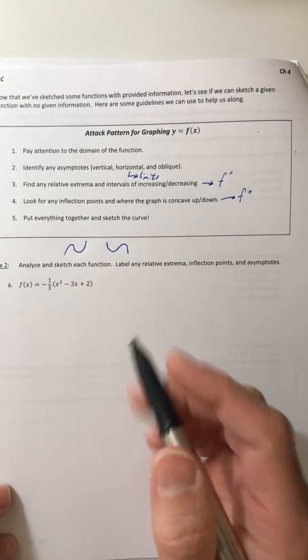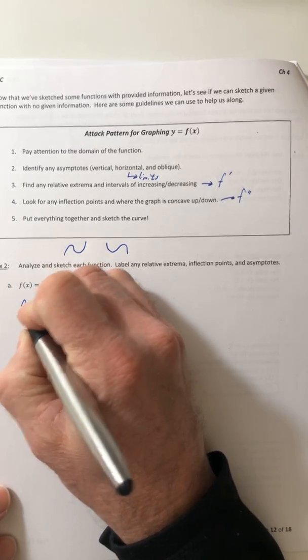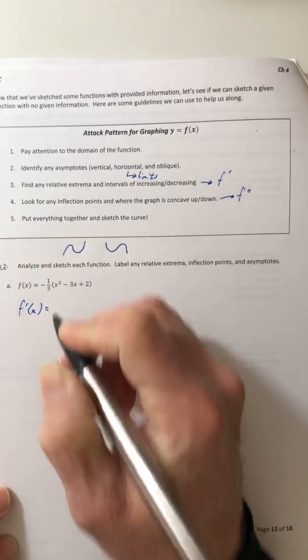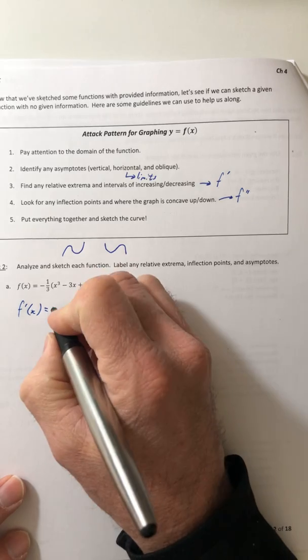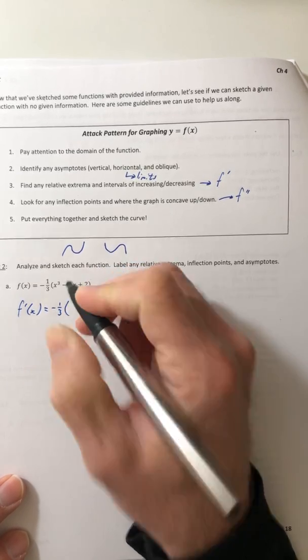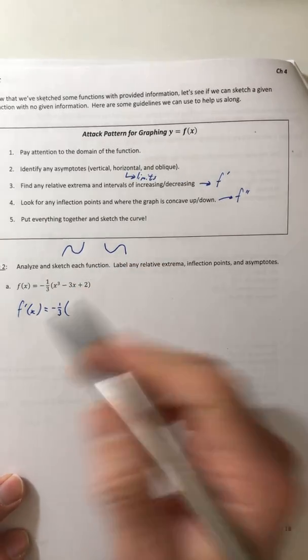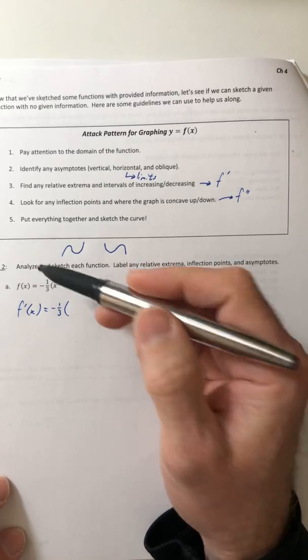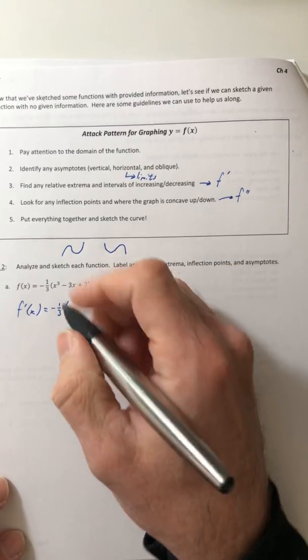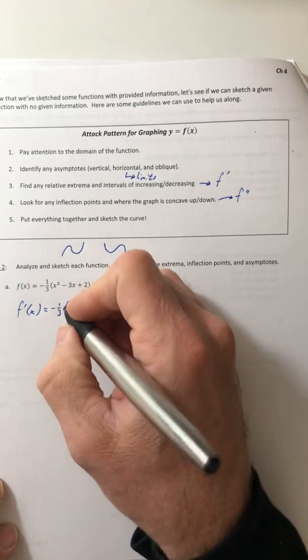So now we're looking for any relative extrema. So let's get the first derivative. So we'll leave the negative one third alone. You can distribute it if you want, and then do the derivative, or leave it out and do the derivative of the inside. You just do not need the product rule.